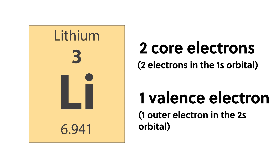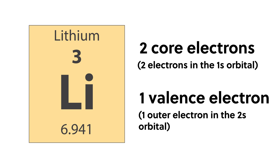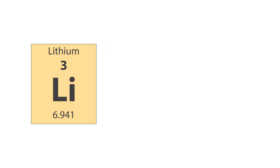For the valence electrons in this case, we can estimate the electron shielding, S, as the number of core electrons. So our equation would be ZF equals 3 minus 2 equals 1. For the outermost electron of lithium, the effective nuclear charge, ZF, is approximately 1. In other words, the net attractive force felt by the lithium valence electron from the nucleus is equivalent to 1.